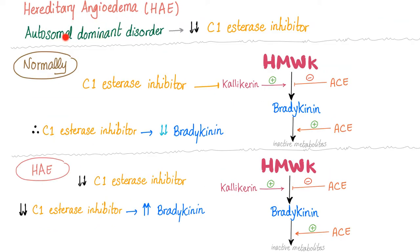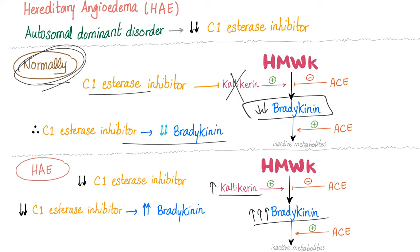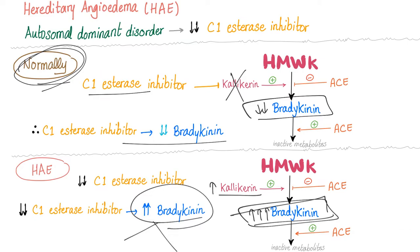Hereditary angioedema is an autosomal dominant disorder where there is deficiency of C1 esterase inhibitor. Normally, the C1 esterase inhibitor inhibits kallikrein. When you inhibit kallikrein, you do not have bradykinin, which is good because bradykinin is pro-inflammatory. However, in hereditary angioedema, you don't have the C1 esterase inhibitor, so kallikrein is left uninhibited, and bradykinin is high — leading to dry cough, angioedema, hypotension, natriuresis, etc.